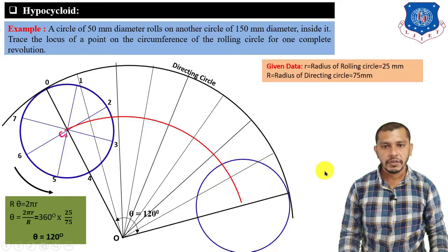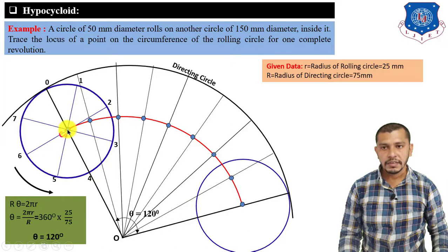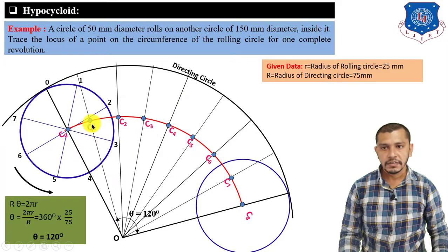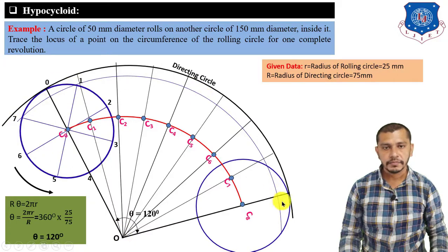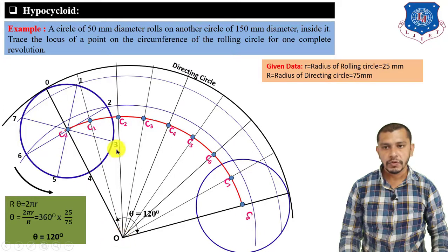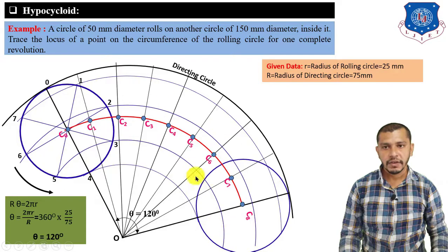Mark the intersection points of this arc with the 120° angle divisions — these are C1, C2, C3, C4, C5, C6, C7, C8, the centers of the rolling circle. Now take center at O with radius equal to O to 1 — draw an arc; radius equal to O to 2 — draw an arc; radius equal to O to 3 — draw an arc; radius equal to O to 4 — draw an arc.